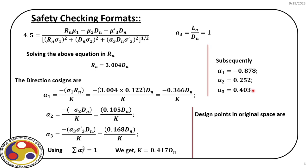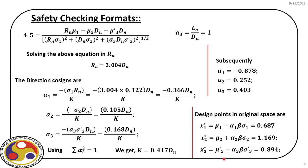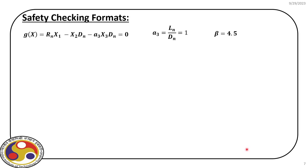Once we estimate α₁, α₂, and α₃, we find the new design point in the original space using the conversion X₁* = μ₁ + α₁·β·σ₁. Substituting known values, X₁* = 0.687. Similarly, we find X₂* and X₃*. Note that because the third random variable is non-normal, we use equivalent parameters — μ₃' and σ₃' — in the third equation; X₃' is estimated based on these equivalent normal values. With the new design points identified, we then repeat the iteration.